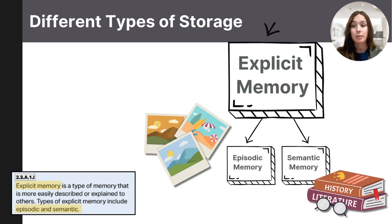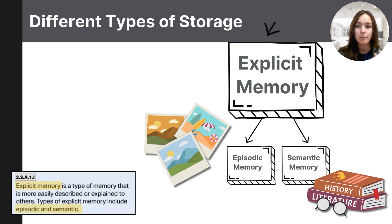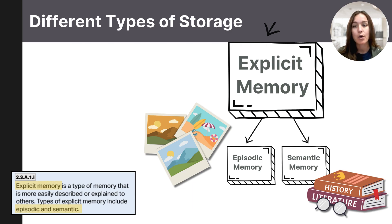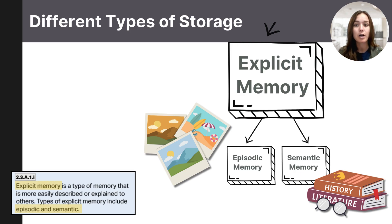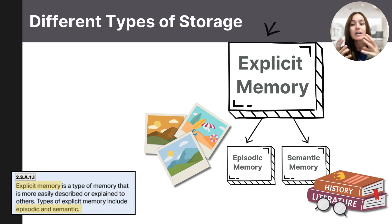There are two main types of explicit memories: episodic memories and semantic memories. Episodic memories refer to the long-term information you store related to experienced events — things like your first day of school, a vacation with your family, or a trip with your friends. Semantic memories refer to the long-term information you store related to knowledge and facts, like who is the president of the United States, or how many continents are there. We can store information more readily in explicit memory if it fits with our existing schemas or frameworks we already have.